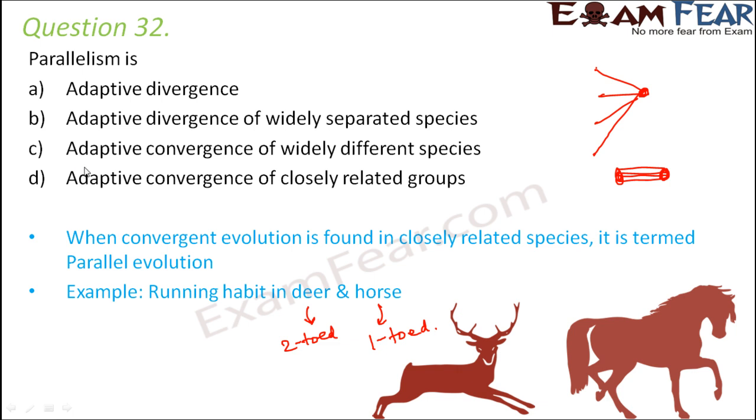So which would be the correct option? It would be convergence — obviously, convergence of closely related groups.